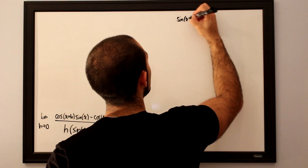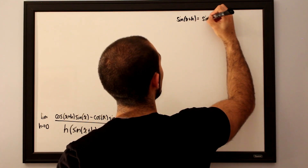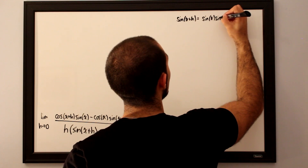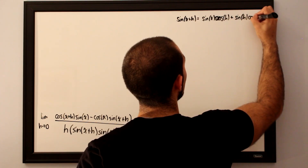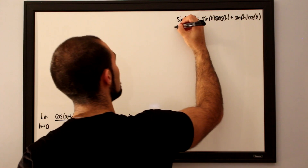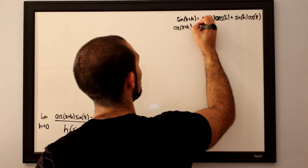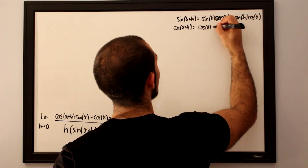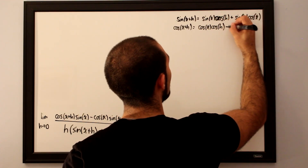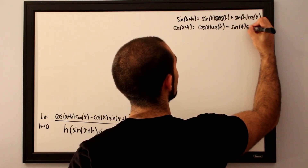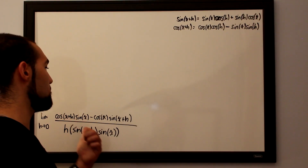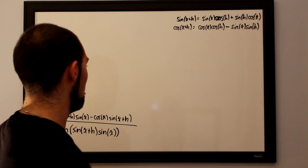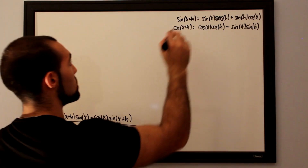The addition of sines can be written out as: sine of x plus h is equal to sine of x times cosine of h plus sine of h times cosine of x. The addition of cosines: cosine of x plus h is equal to cosine of x times cosine of h minus sine of x times sine of h. We will be making these substitutions wherever we see cosine of x plus h and sine of x plus h in the numerator.